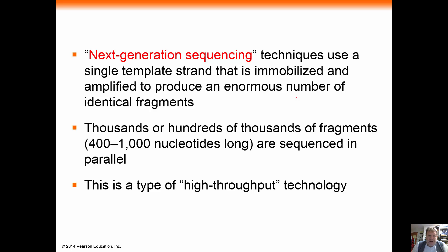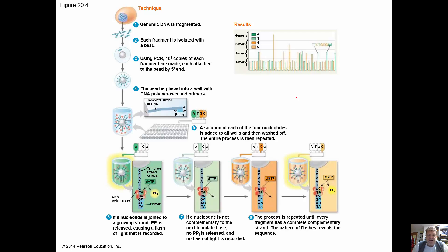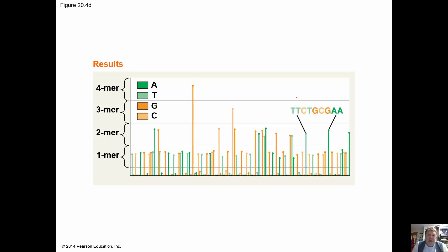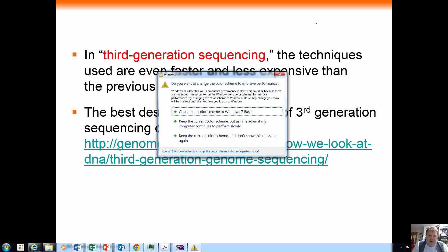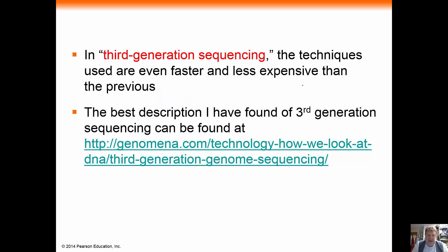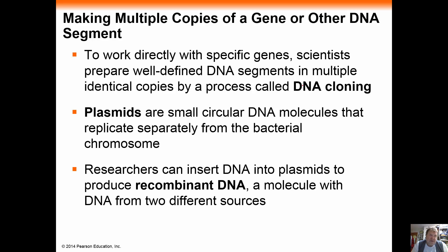We now have next-generation and third-generation DNA sequencers which highly automate this process. Basically what we do is take a genome, chop it up into little pieces, sequence each one of those pieces many times, and then use computers to put those pieces back together. Ultimately what we're going for is to get the genetic sequence down to about a thousand base pairs for our particular genome.